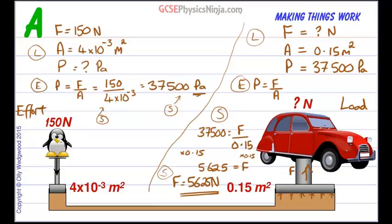So this penguin, which has a weight of 150 newtons, that's about 15 kilograms, has lifted a car of a weight of 5625 newtons. That's pretty impressive. And that's using the force multiplier hydraulic system. Because the area of this piston is so much smaller than the area of the load side, and so a force acting on a very small area creates a high pressure. And that high pressure is transmitted through the fluid and acts on a large area to create a large upwards force in this case.